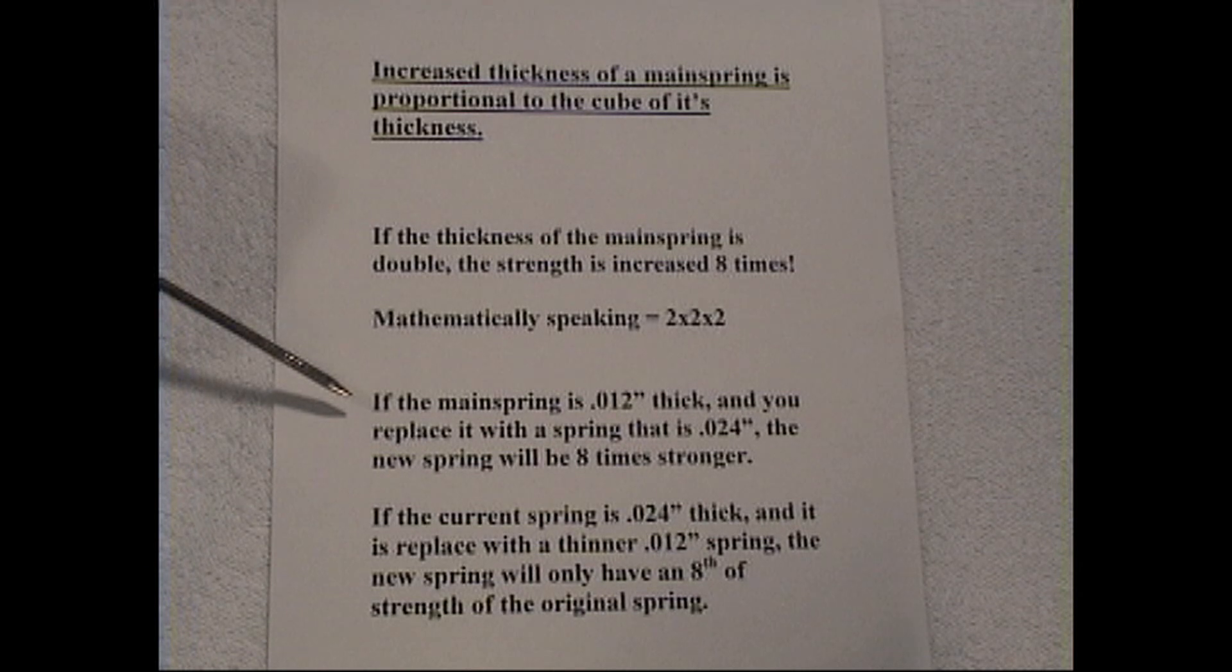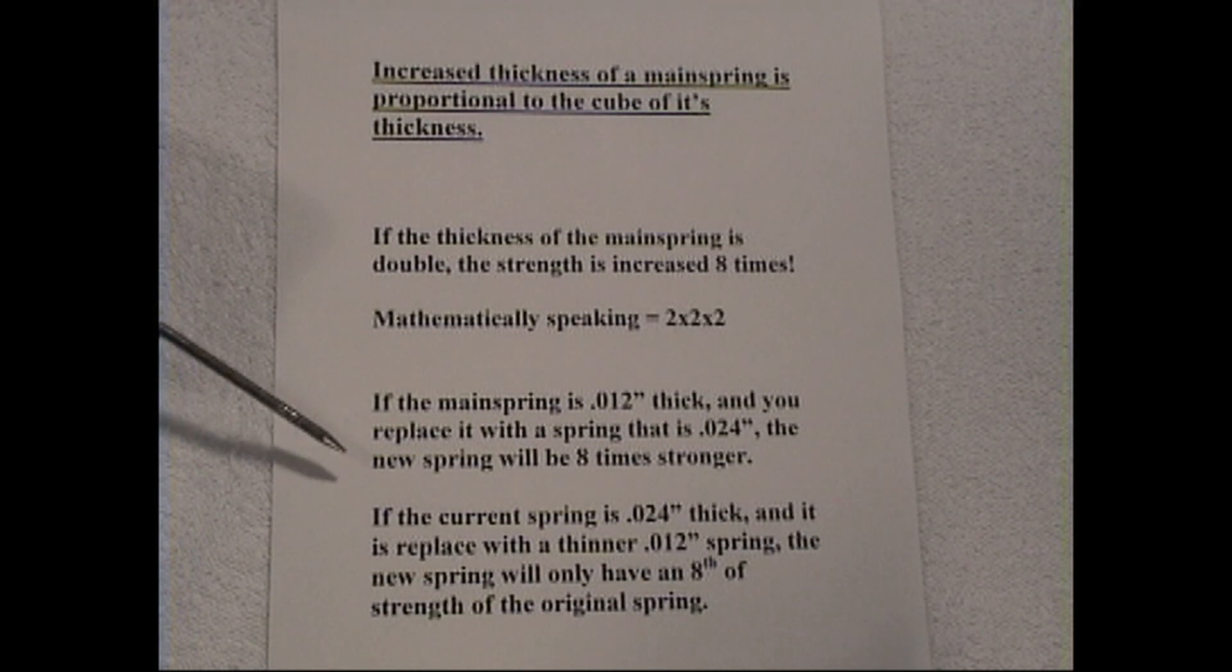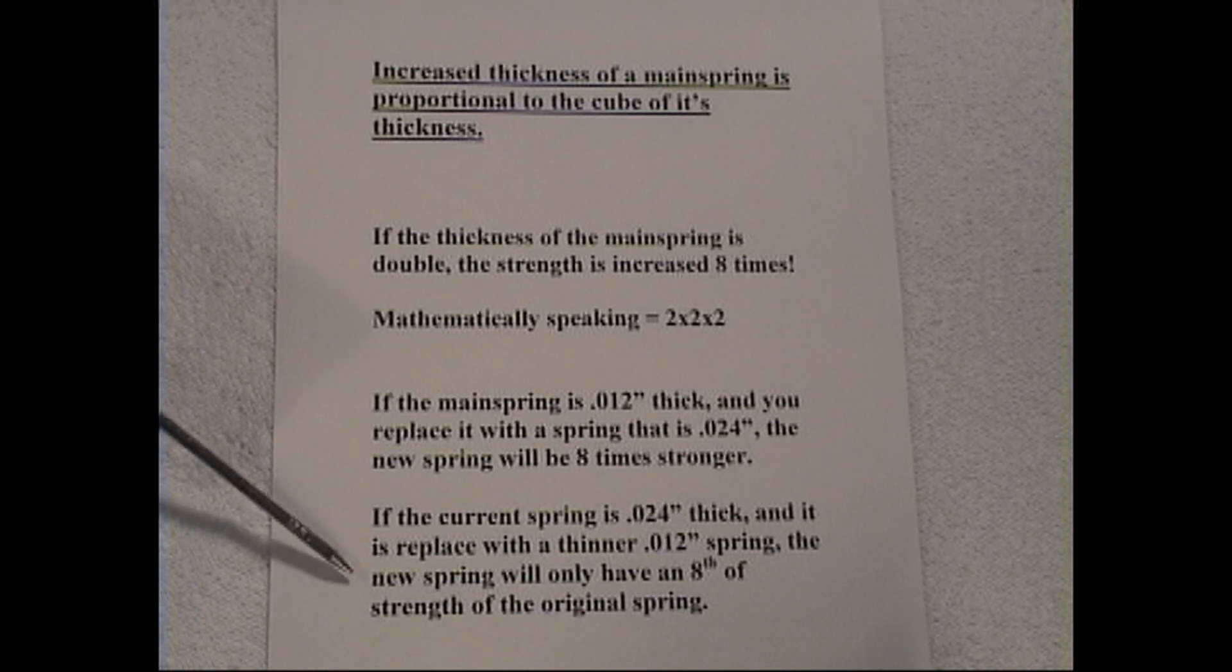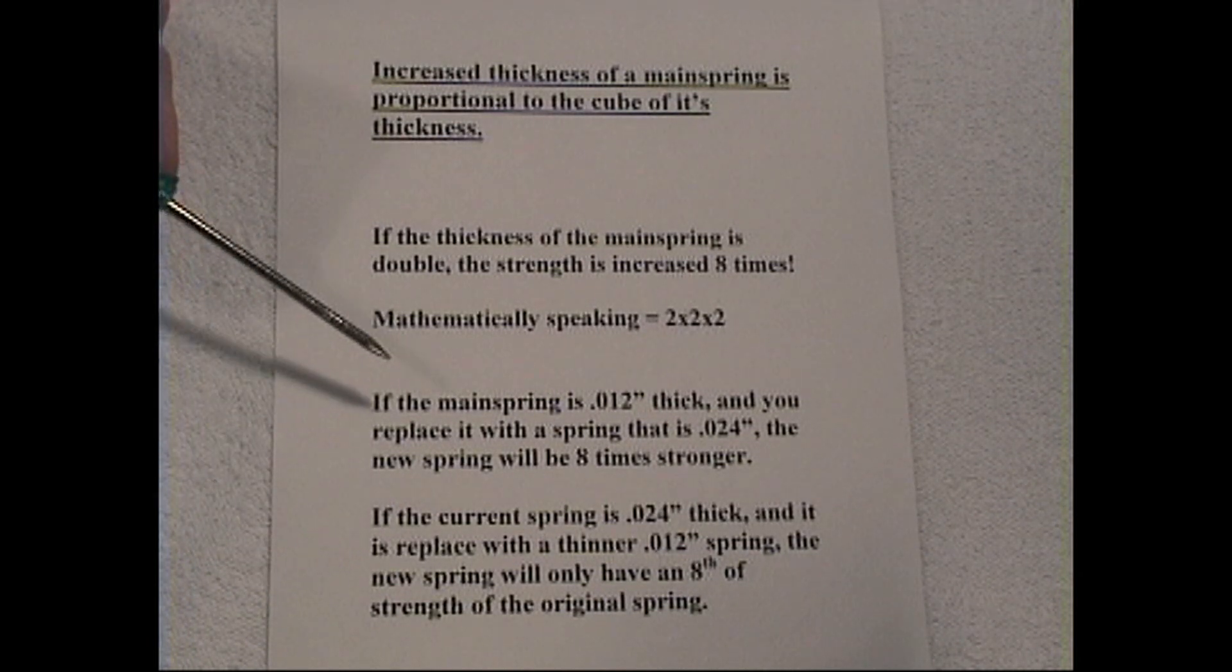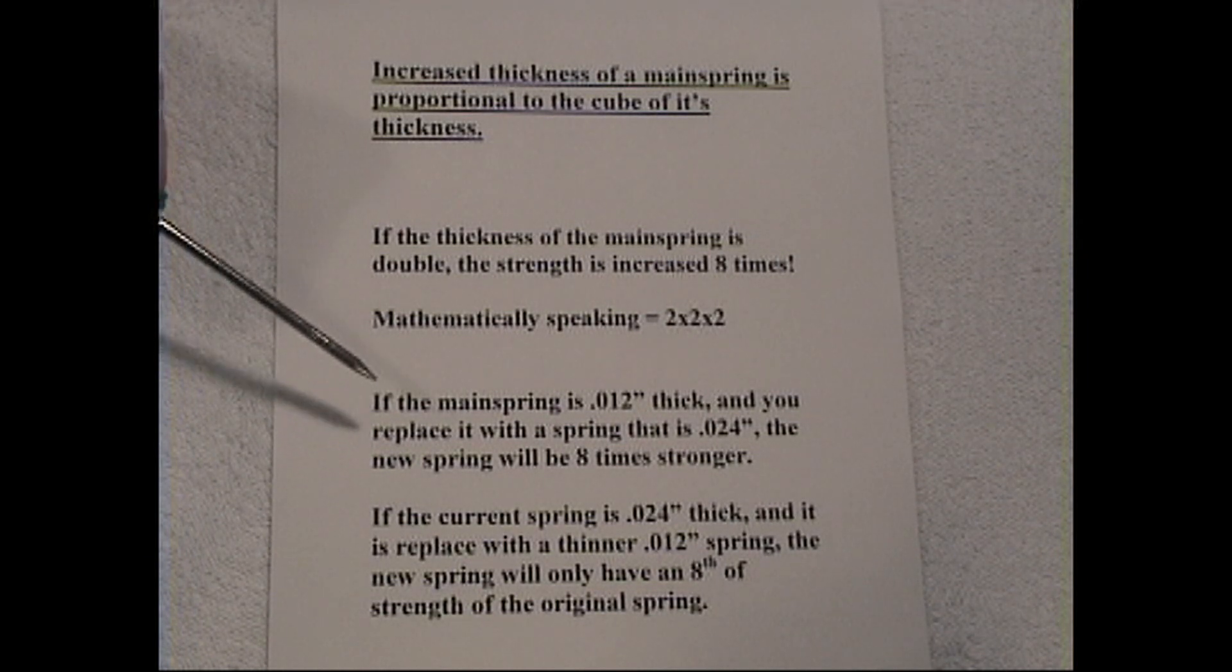If the mainspring, for example, is twelve thousandths thick, and you replace it with a spring that is twenty-four thousandths thick, the new spring will be eight times stronger. If the current spring is twenty-four thousandths thick, and you replace it with a thinner twelve thousandths spring, the new spring will only have an eighth of the strength of the original spring. As you can see, a variation in thickness has a tremendously greater difference to the outcome of the strength of your spring than the width or the length. So the key thing you have to consider is the thickness gives the greatest impact.